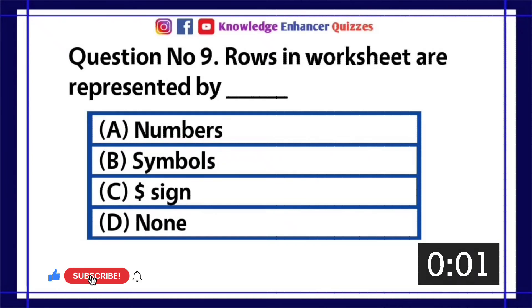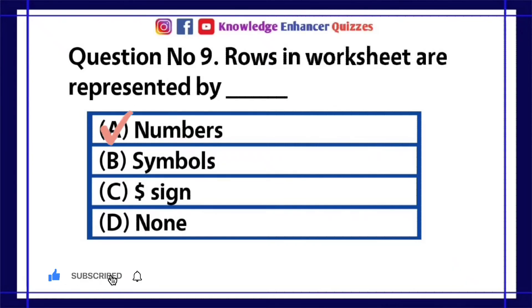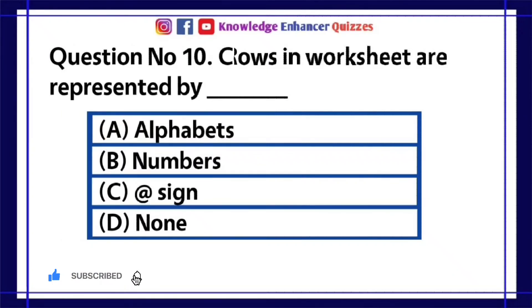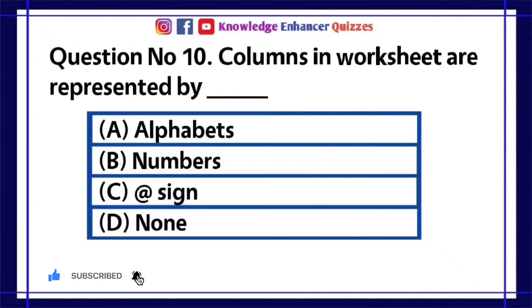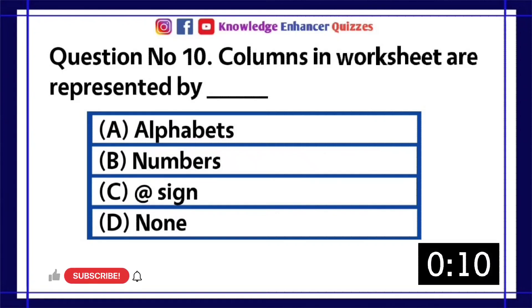Option A is the right answer. Question number 10: Columns in worksheet are represented by — A. Alphabets, B. Numbers, C. At the rate of sign, D. None.